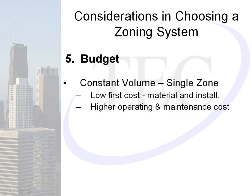The fifth consideration is budget. For constant volume single zone, you'll have the lowest first cost because the rooftop units are significantly less complicated. Duct work doesn't have to be high-pressure rated, lowering material costs. However, you'll have higher operating and maintenance costs because every rooftop has its own compressor, fan motor, and condenser fan motor — all taking energy to run — with the highest energy use at startup.